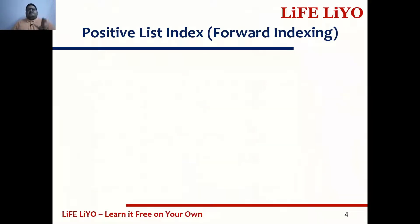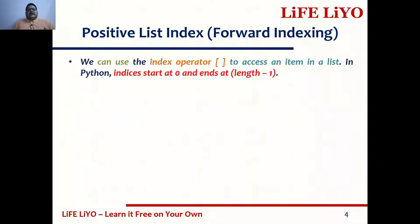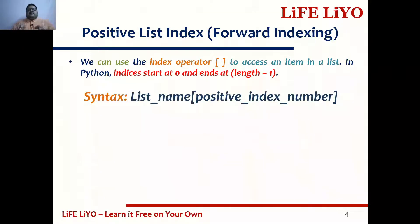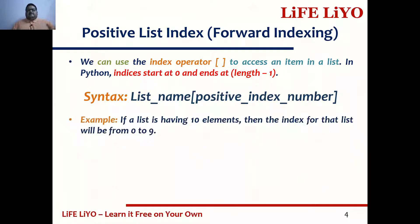Now, what is positive list index? To access any element from the list, we have to use a number, which we call the index or indices. Positive index means the indices start from 0 and go up to length minus 1. For example, if you have a list with 10 elements, the index will start from 0 and end at the 9th index number.